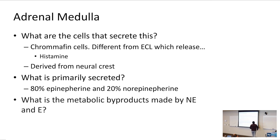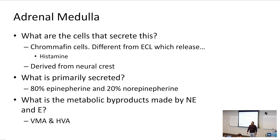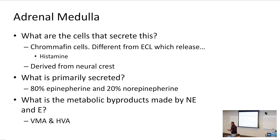What are the metabolic byproducts made by norepinephrine and epinephrine? Those are going to be VMA and HVA. This is really important on your USMLE for patients with pheochromocytoma that have increased amounts of catecholamines — in their urine and serum, VMA and HVA are going to be elevated.